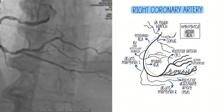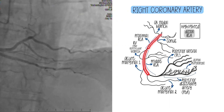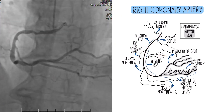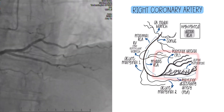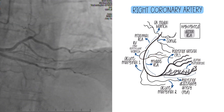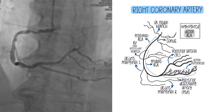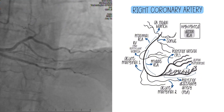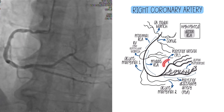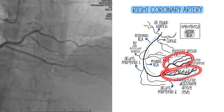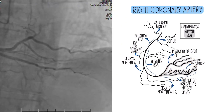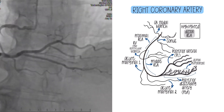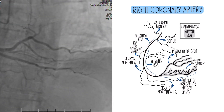So we have the proximal RCA, the middle RCA — which will have the RV branch that we'll talk about — and then the distal RCA, which is sometimes present and sometimes isn't. What you're looking at right now is what we call a dominant right coronary artery, meaning it has both the PL (posterior lateral) and the PDA coming off of the RCA. So it covers a lot of territory and is a very important vessel.